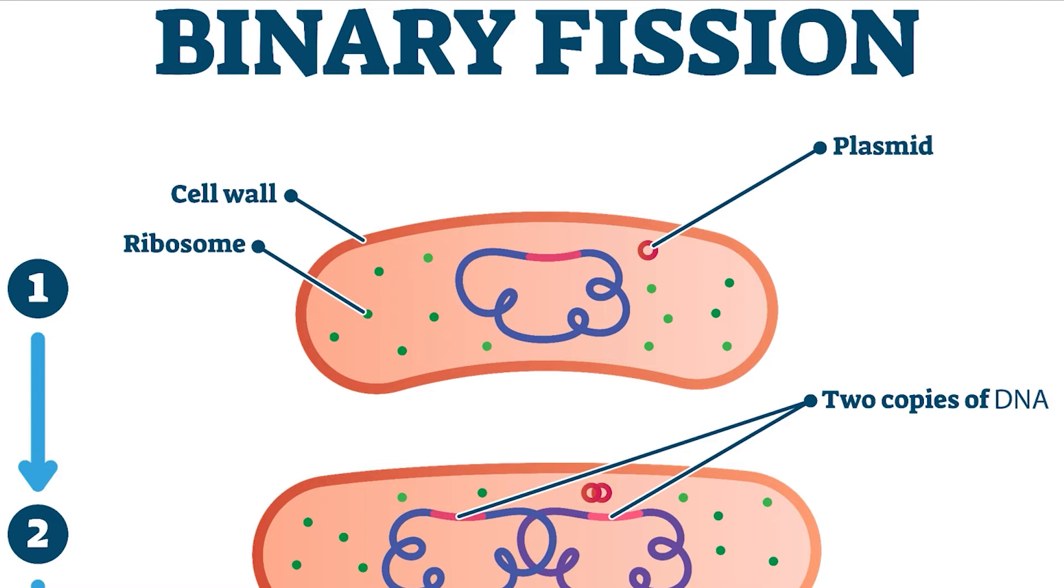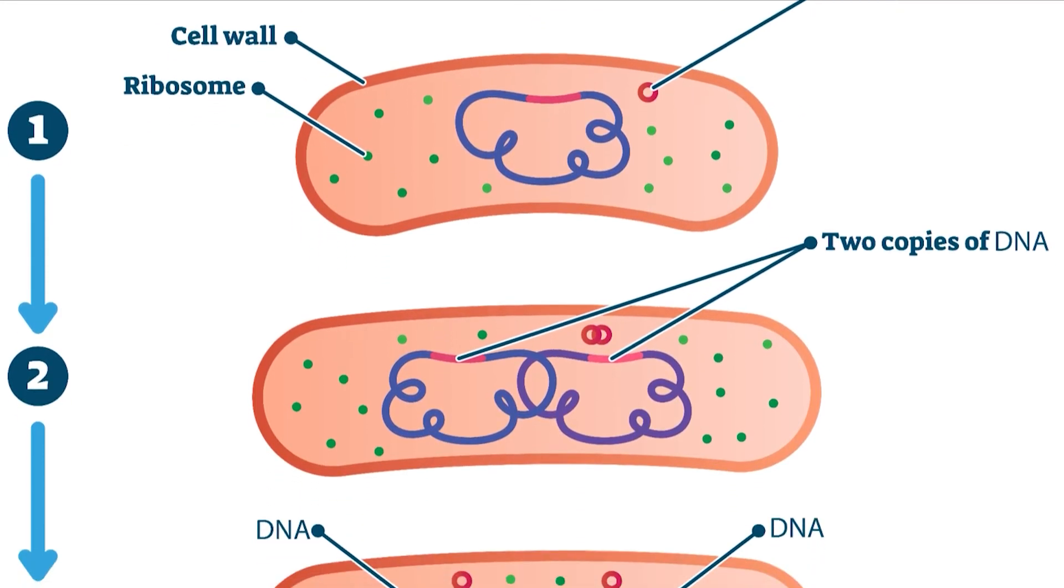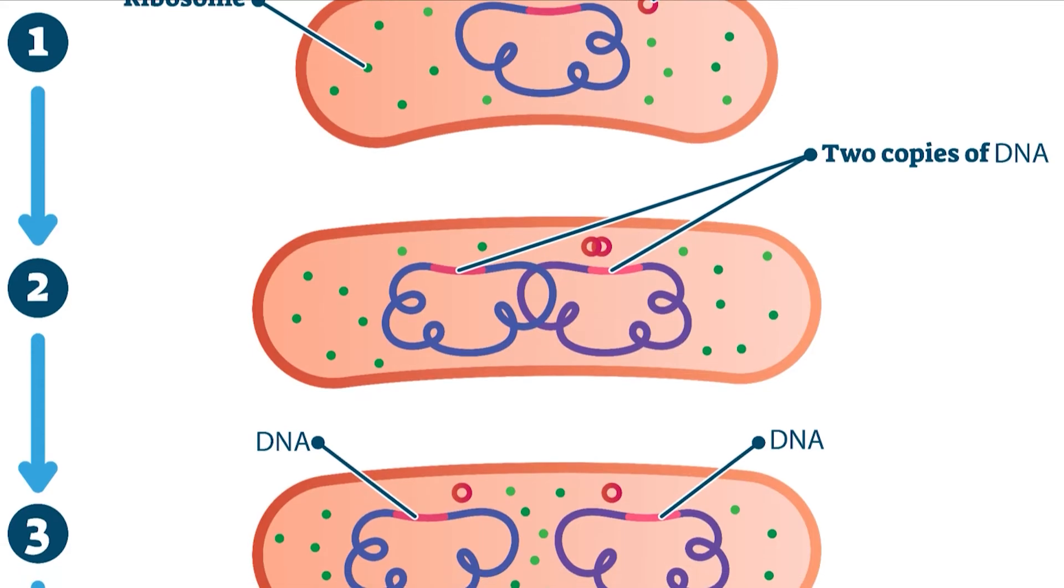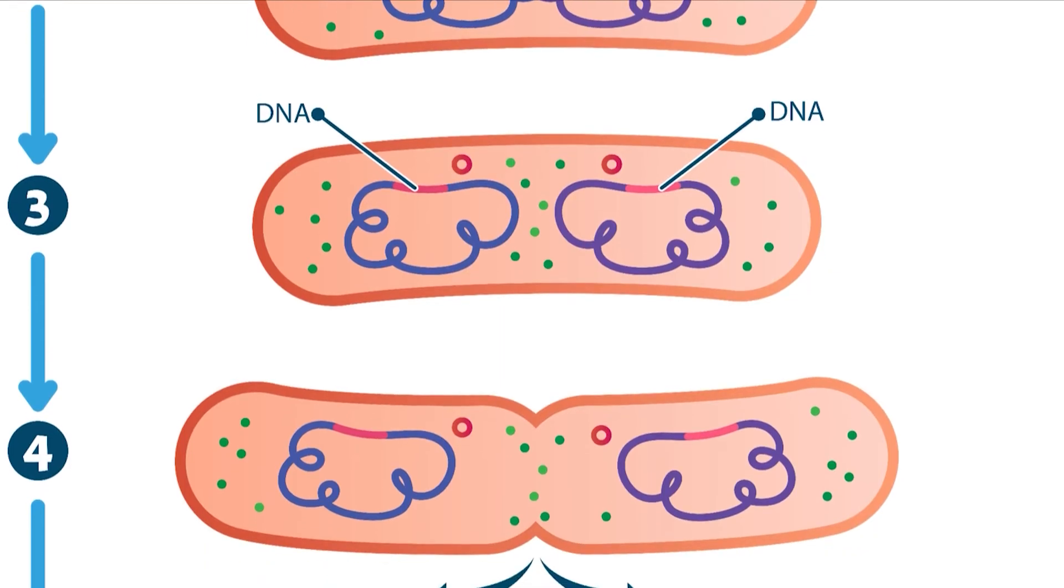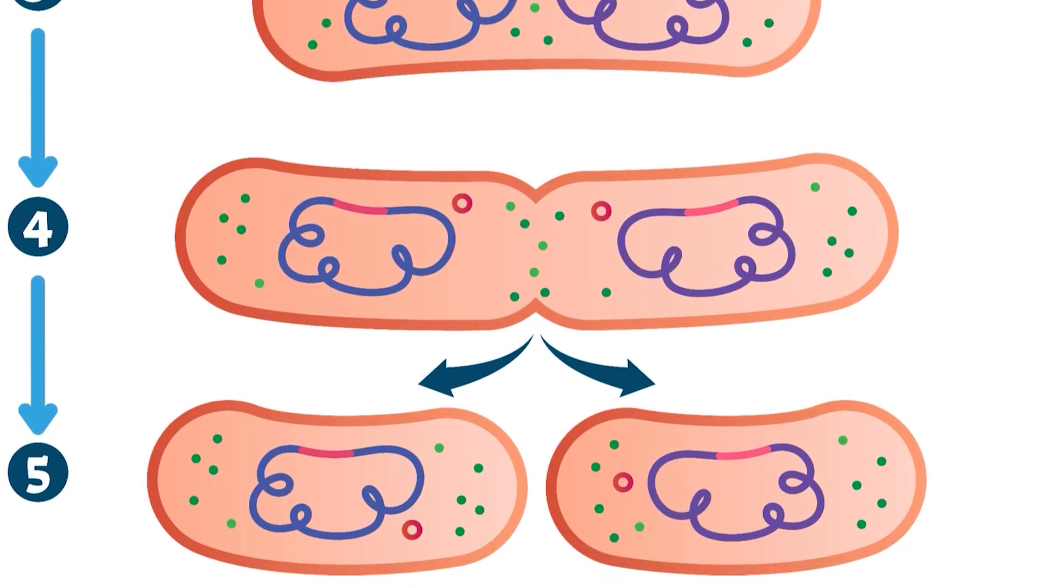The overall process starts with DNA replication in the S phase of the cell cycle. Then the cell enters binary fission stage, and simply separates each strand of circular DNA into one of two new daughter cells.